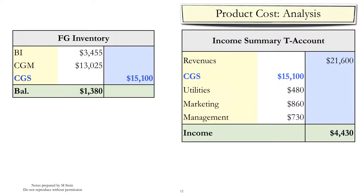When items are sold, the cost of the inventory is recognized on the income statement. This is done with a credit to the finished goods account and a debit to the income summary account.